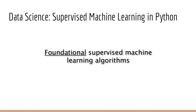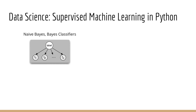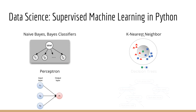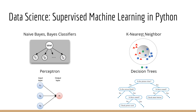Specifically, we look at Naive Bayes and Bayes classifiers, we look at k-nearest neighbor, we look at the perceptron, and we look at decision trees. So why are these foundational? Basically anyone who wants to claim that they know machine learning has to know about these algorithms. There is nobody who can claim to be a machine learning practitioner but doesn't know about Naive Bayes or any of these other models. These are the ABCs of machine learning.